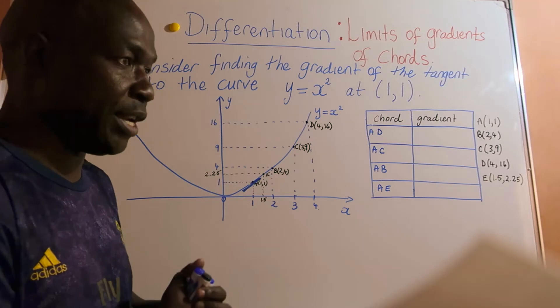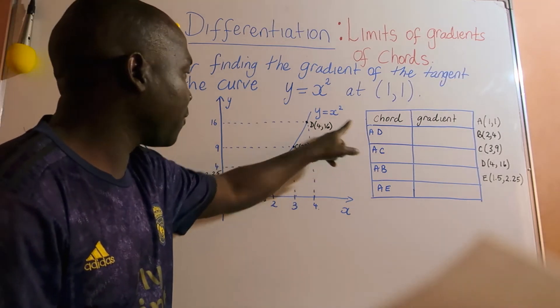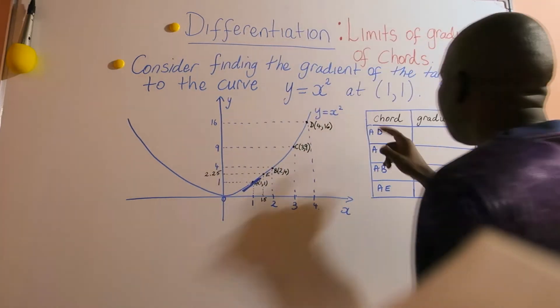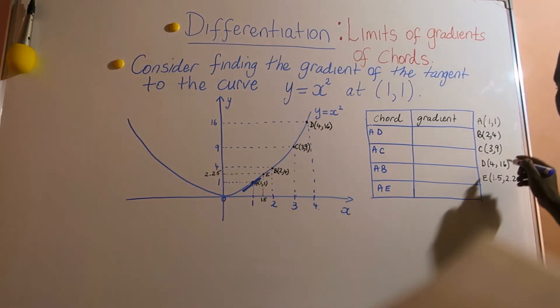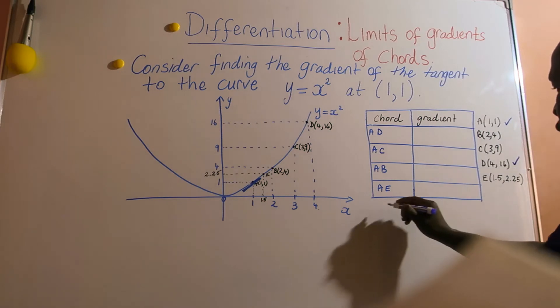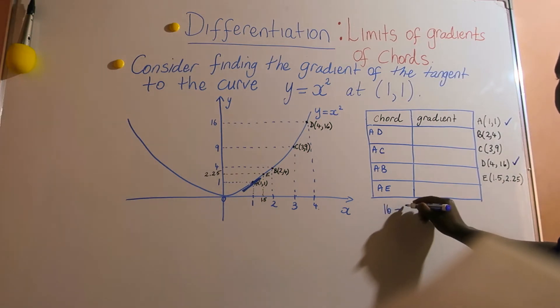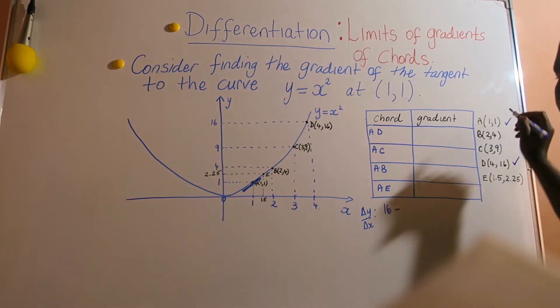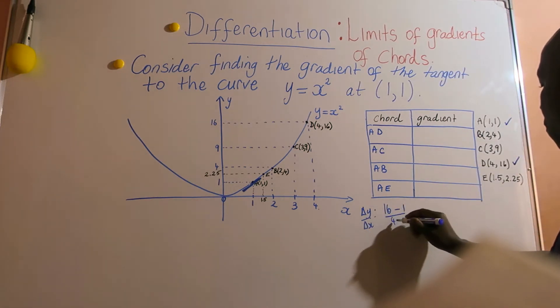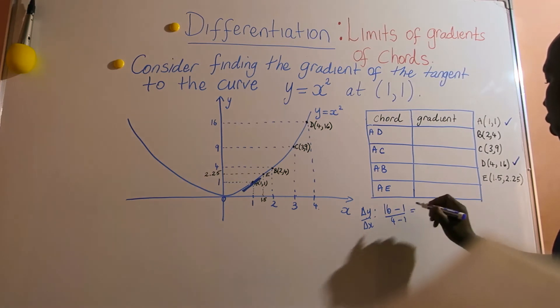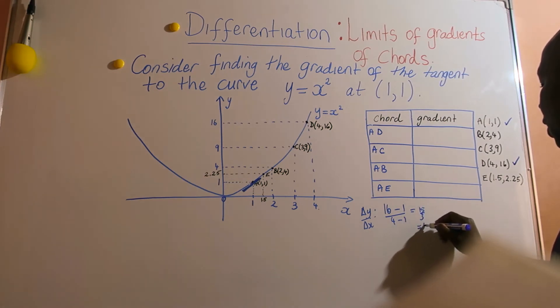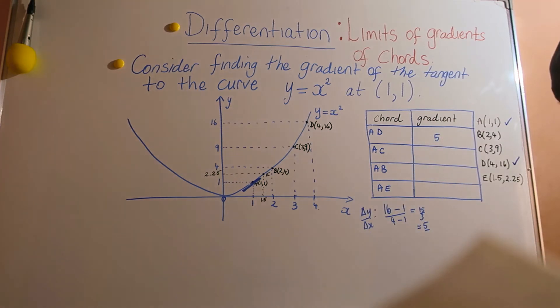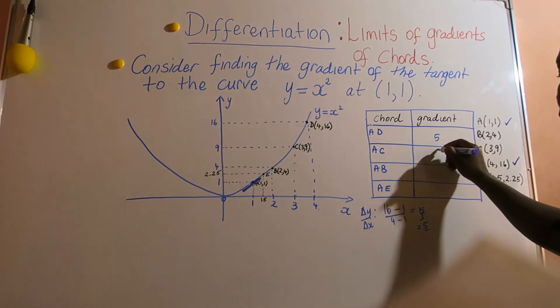And look at the limits of those gradients. So I'm going to take the point B, which is the furthest point first. If you are going to find the gradient of AD, this is your D, this is your A. So you are going to go 16 minus, remember this is change in y over change in x, so this is going to be 16 minus 1 over 4 minus 1, and you are going to get 15 over 3, which is equal to 5.